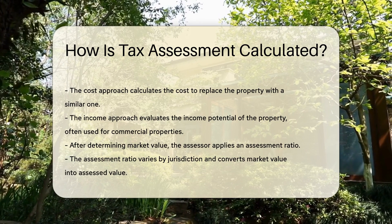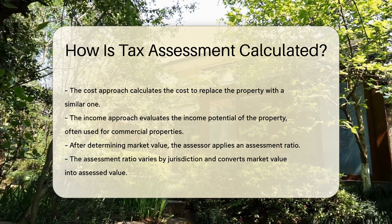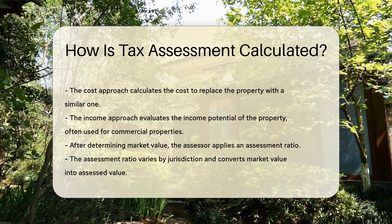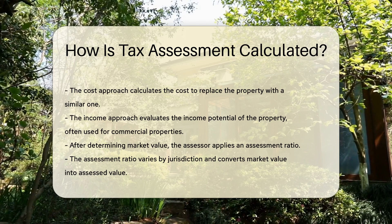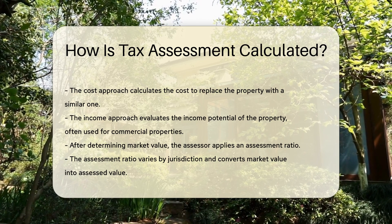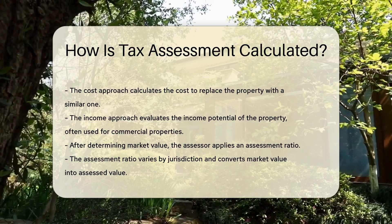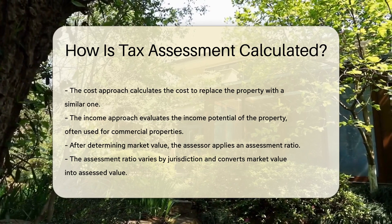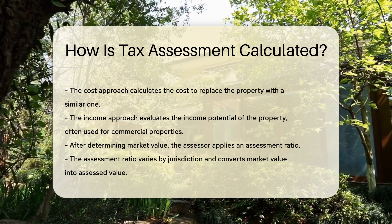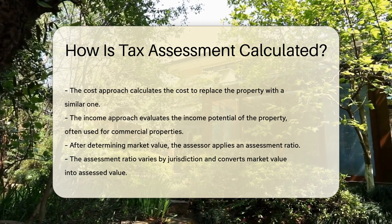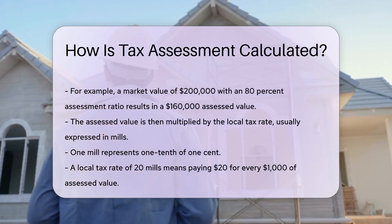Once the market value is determined, the assessor applies an assessment ratio. This ratio varies by jurisdiction and can significantly impact your tax bill. The assessment ratio converts market value into assessed value. For example, if the market value is $200,000 and the assessment ratio is 80%, the assessed value is $160,000.